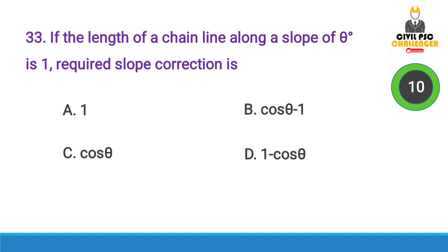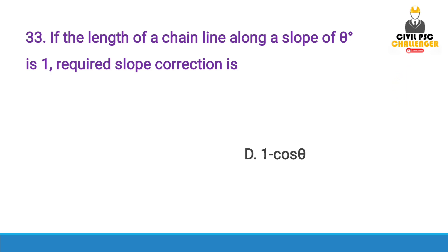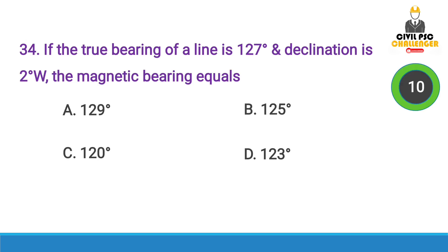Next question: If the length of a chain line along a slope of theta degrees is L, the required slope correction is — Answer option D, L(1 - cos θ).